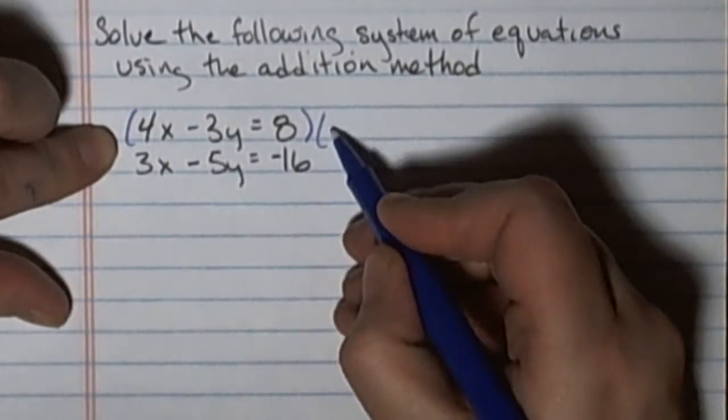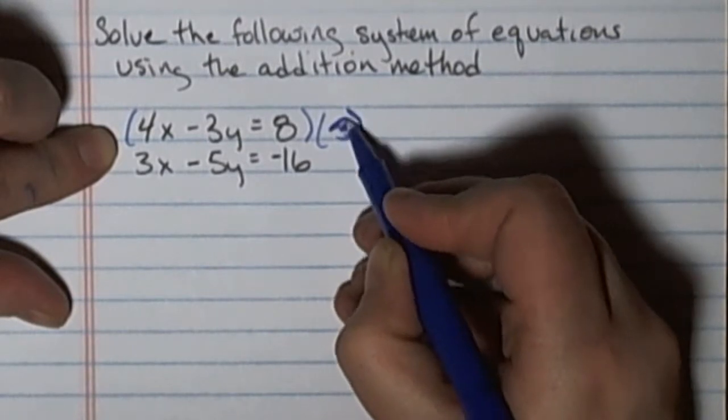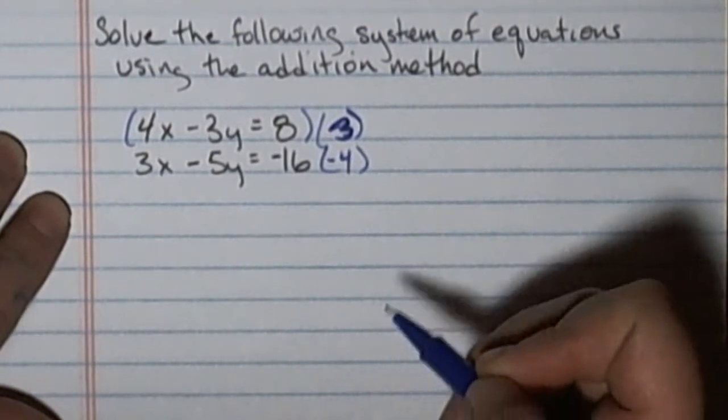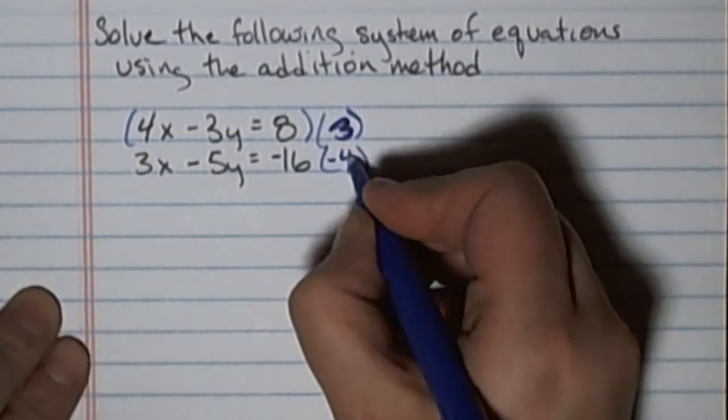I'm going to multiply this top equation by a positive 3. And I'm going to multiply this bottom equation by negative 4. So the top equation is multiplied by 3 and the bottom equation by negative 4.